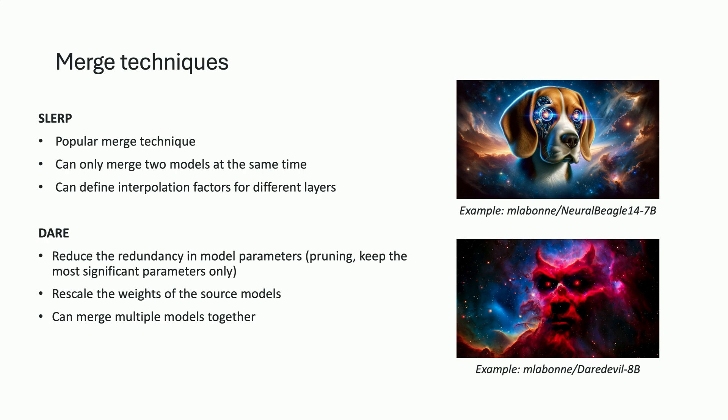Then you have DARE, where you want to reduce the redundancy of the model parameters. To do that, you use pruning — you select the most significant parameters in your model weights and rescale the weights of these source models. The advantage is that you can merge more than two models — even seven or eight models together — and it works really, really well. I strongly recommend this technique, especially with seven or eight models.